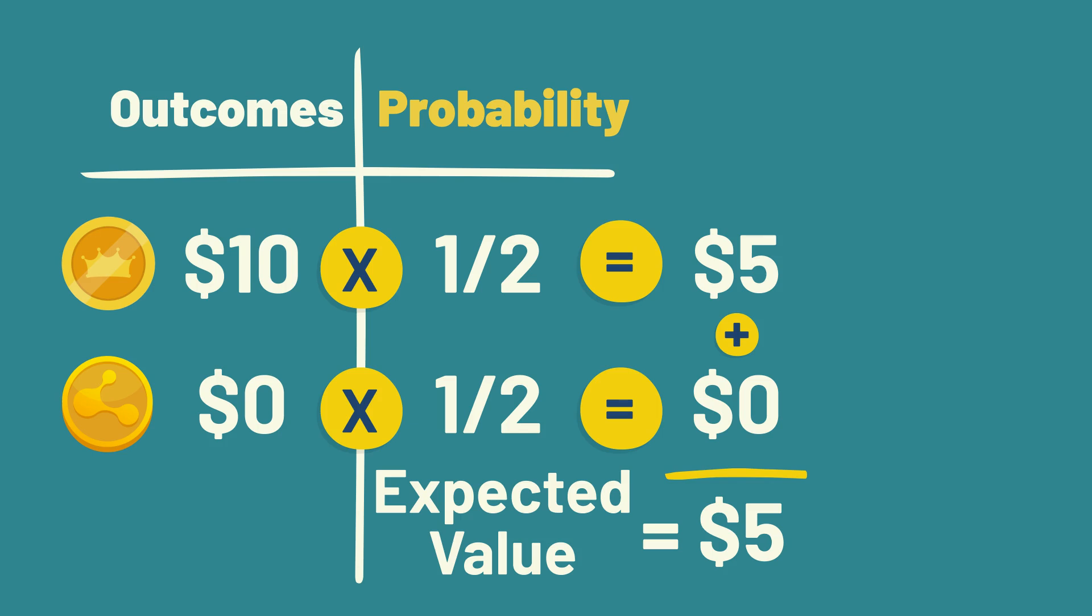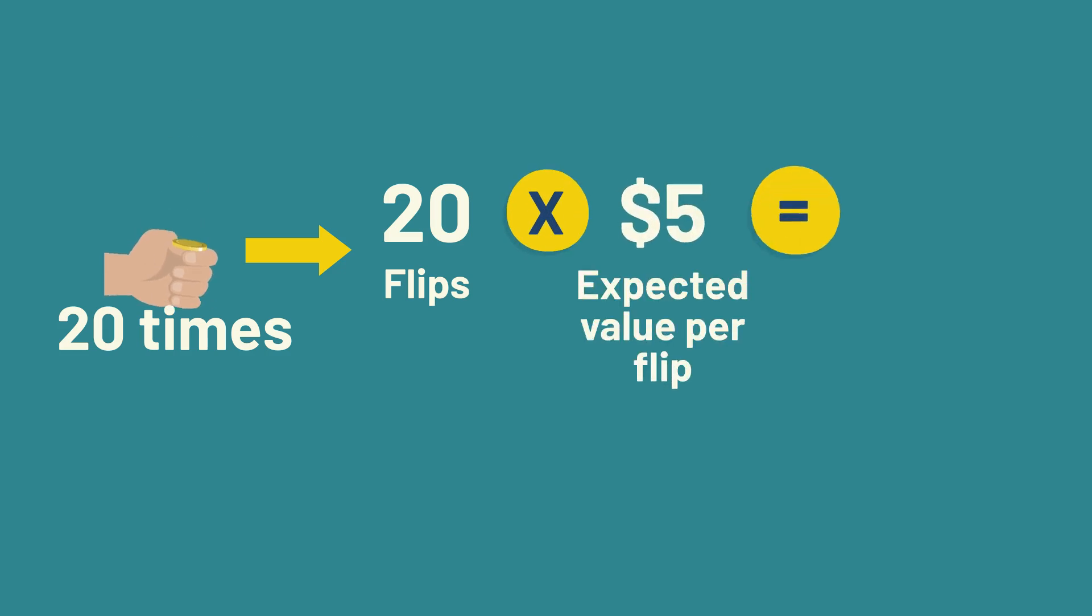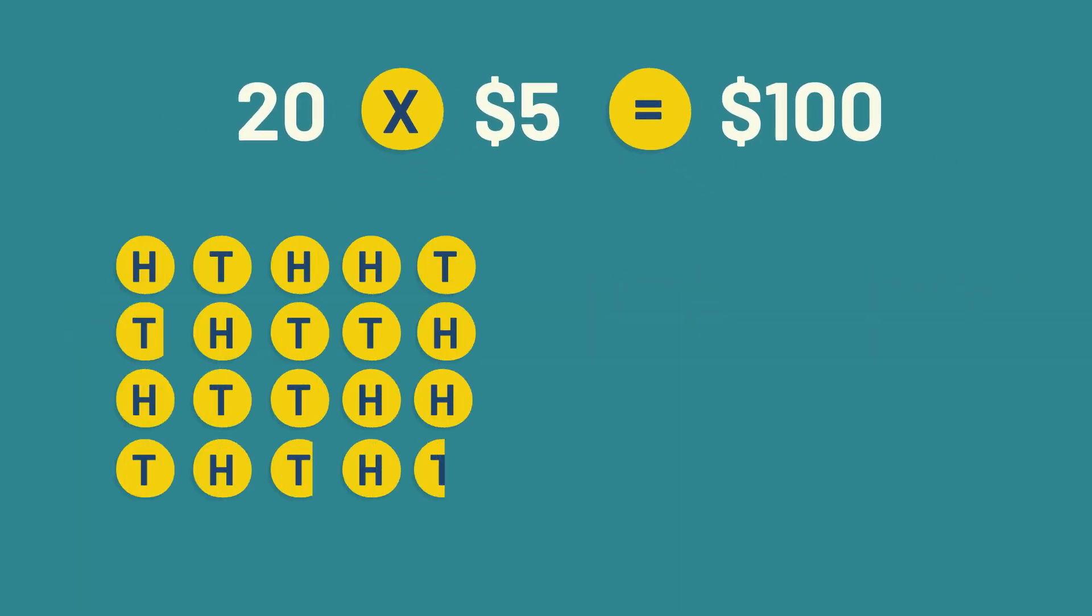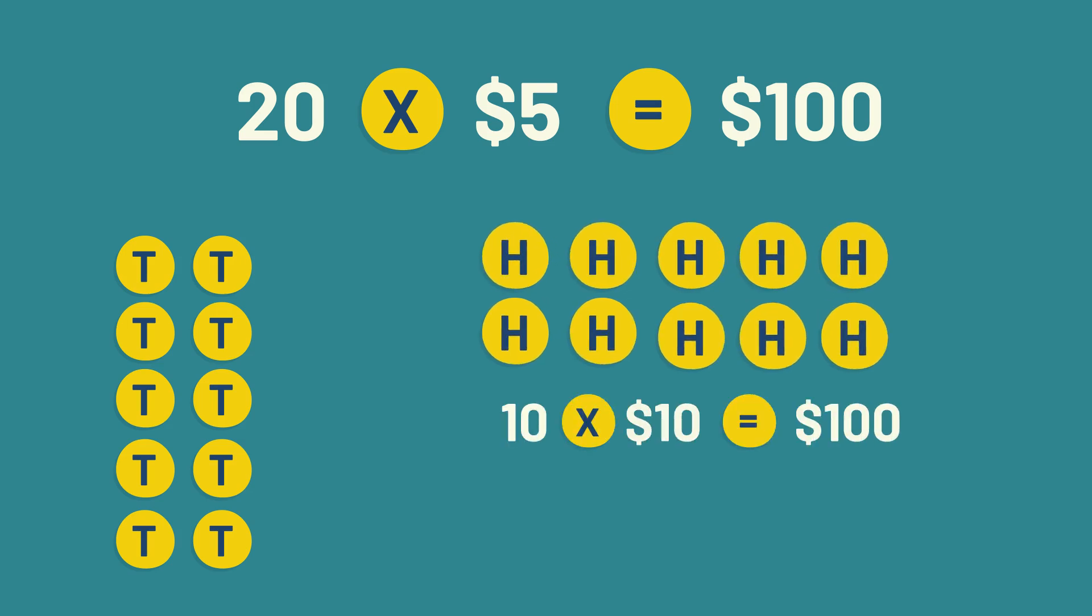We can use expected value to estimate the outcomes from playing many times. For example, if we played the coin flip game 20 times, we'd expect to end up with 20 times $5, or $100. This makes sense. If we play 20 times, we expect to get heads approximately 10 times, earning $10 for each of those heads.